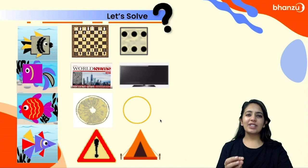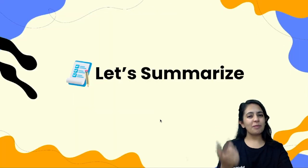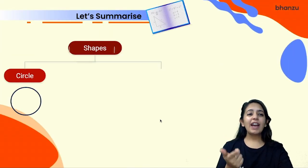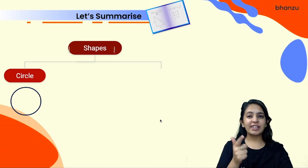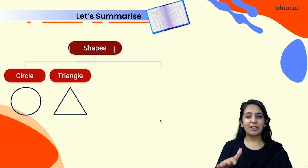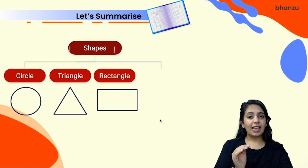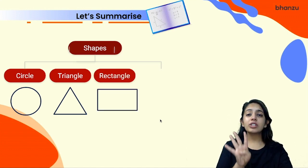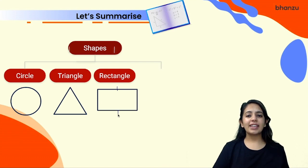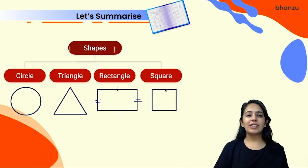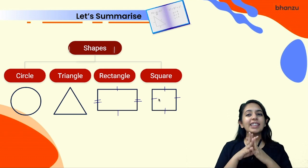With that we have learnt about the four shapes — it's time to summarize. The circle is round and doesn't have any sides or corner points. The triangle has three sides. The rectangle has four sides and its opposite sides are equal. And the square has all four sides equal in length.